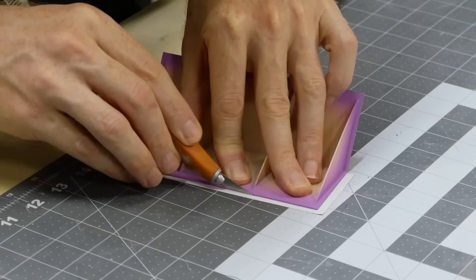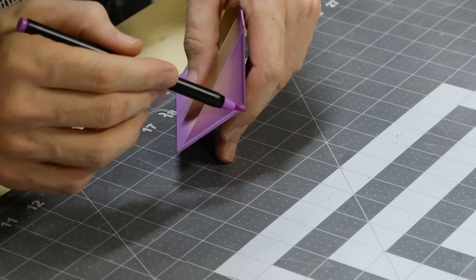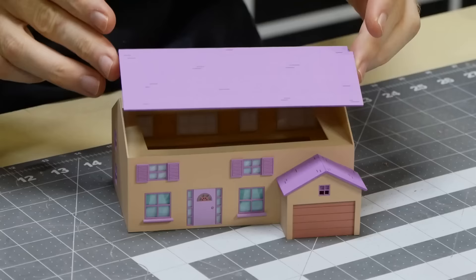Excess paper is trimmed away using a sharp hobby knife. The white edges of the paper are colored in with some purple texture just so they aren't so obvious. Now we can attach the chimney.